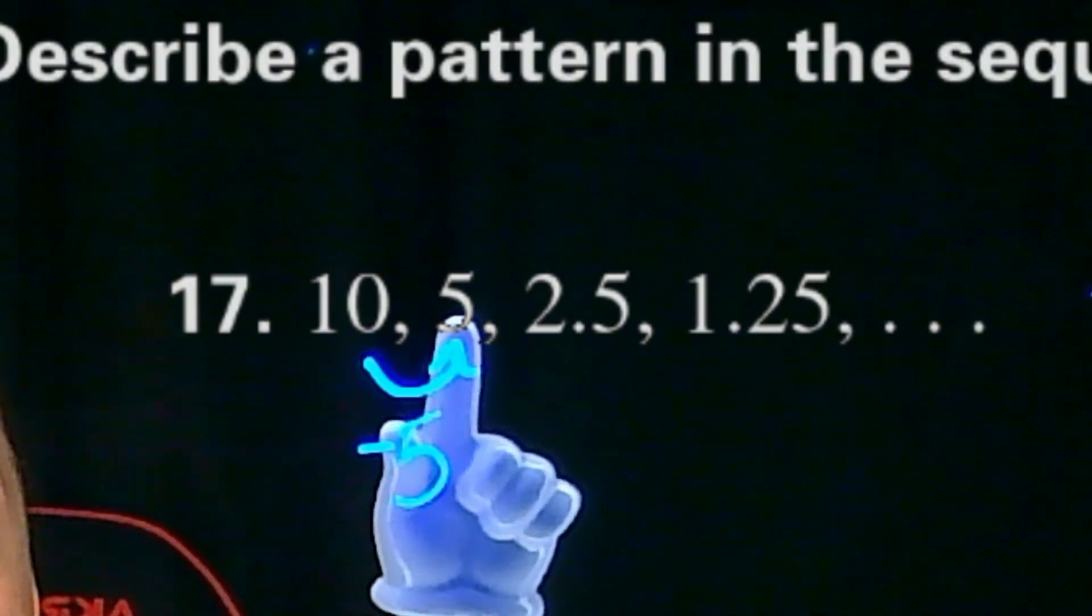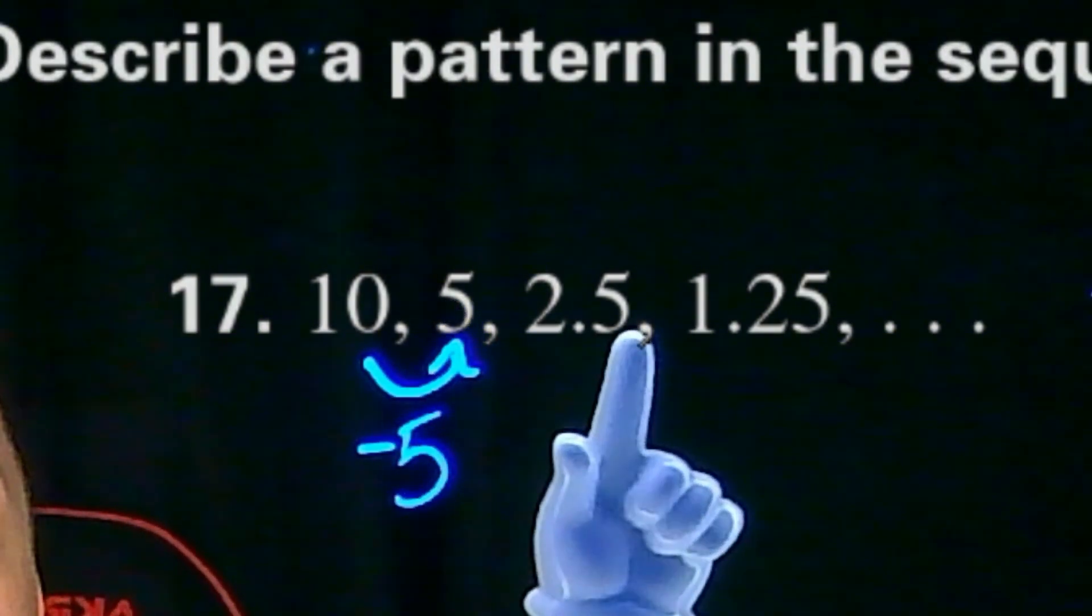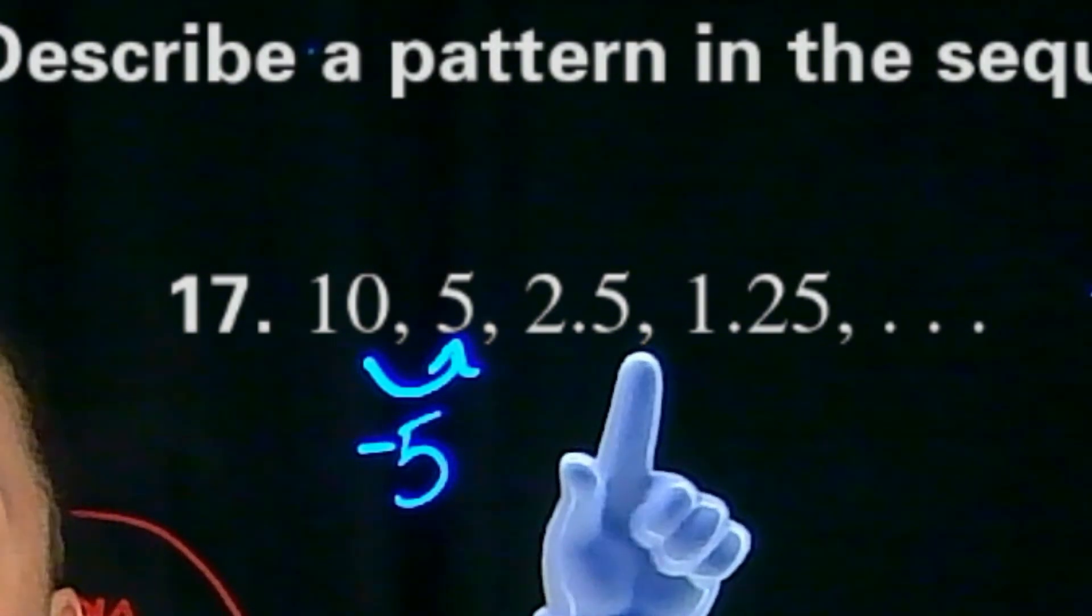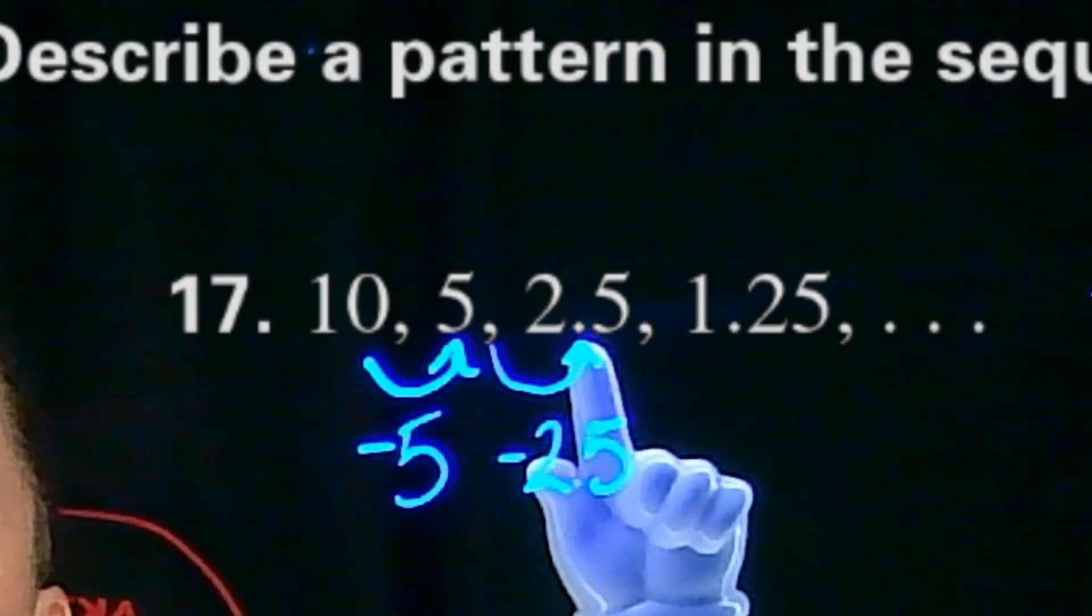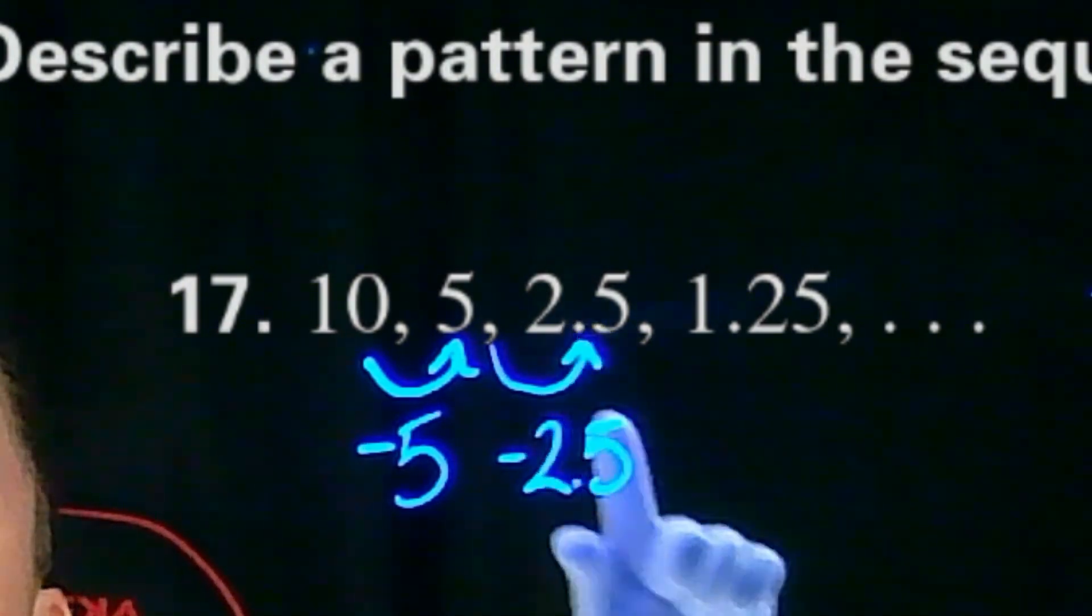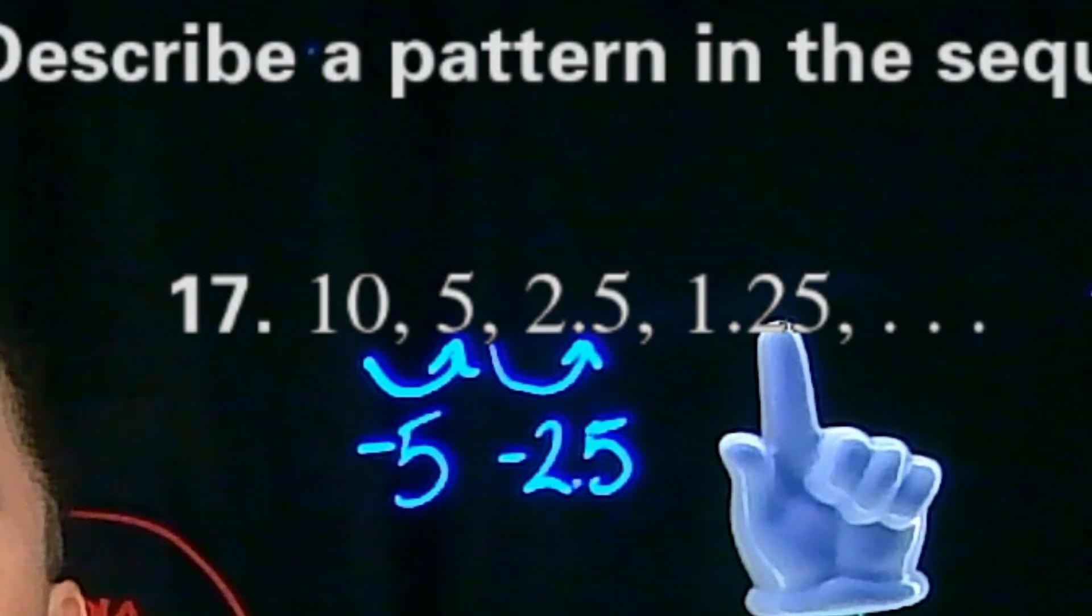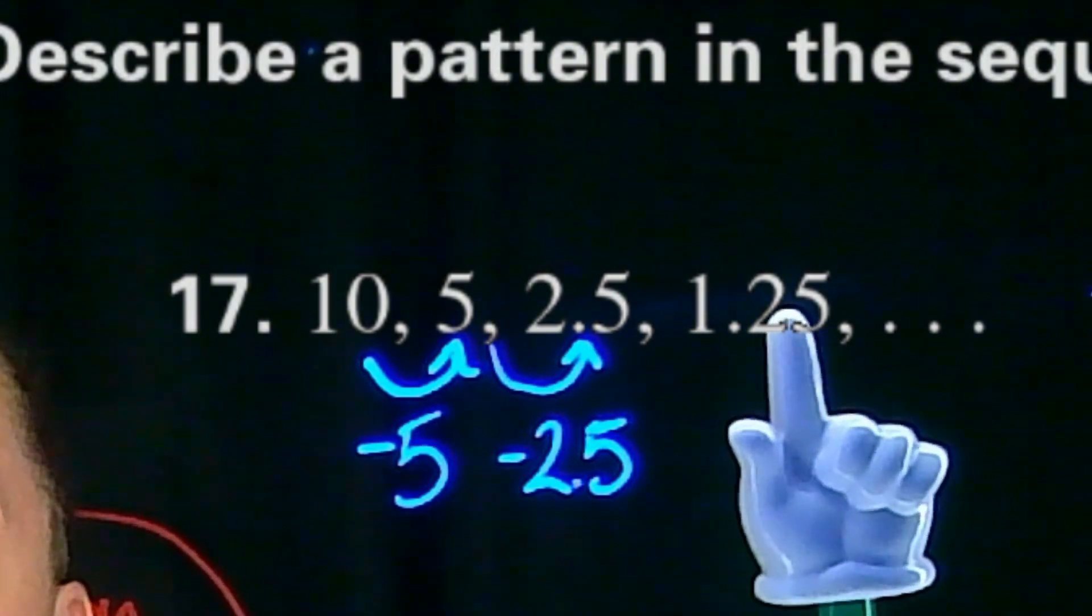And going down from 5 to 2.5 is also a subtraction of 2.5, or minus 2.5. Then going down from 2.5 to 1.25 is a subtraction of 1.25, or minus 1.25.